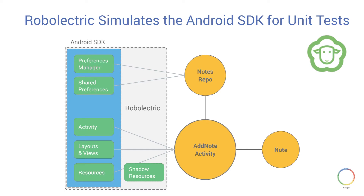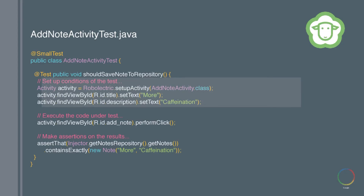RoboElectric is an Android unit testing framework that runs tests as local unit tests on your local developer's workstation. Since most of the Android framework is written in Java, RoboElectric can run that Java code on your desktop. This means you'll have access to resources, views, and most Android APIs will work just as you'd expect. RoboElectric initializes your application based on a manifest, wires everything together, sets up the activity, and inflates the layout — calling real Android methods. This takes a second or two, so it's perfect for the red-green refactor cycle.